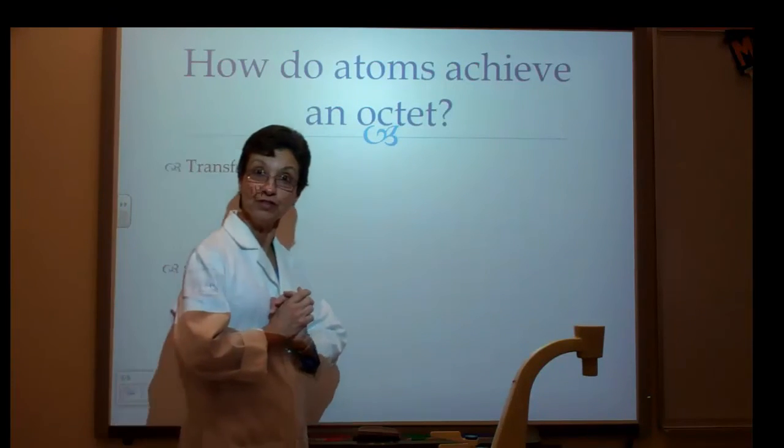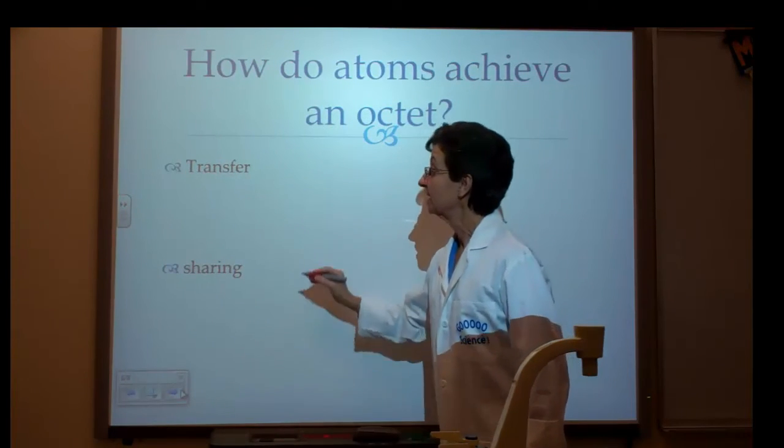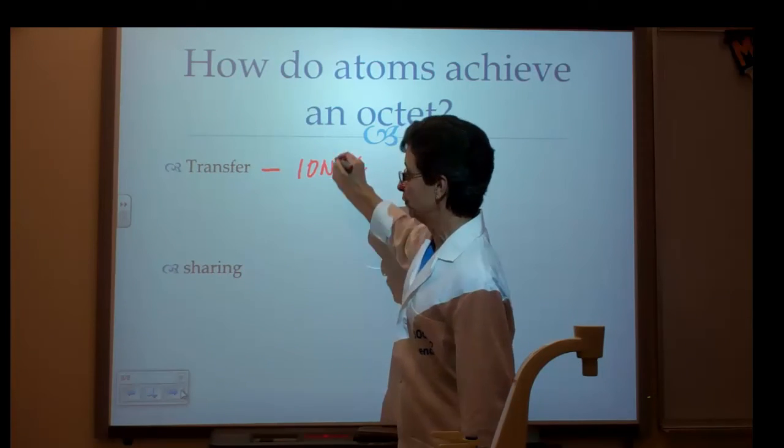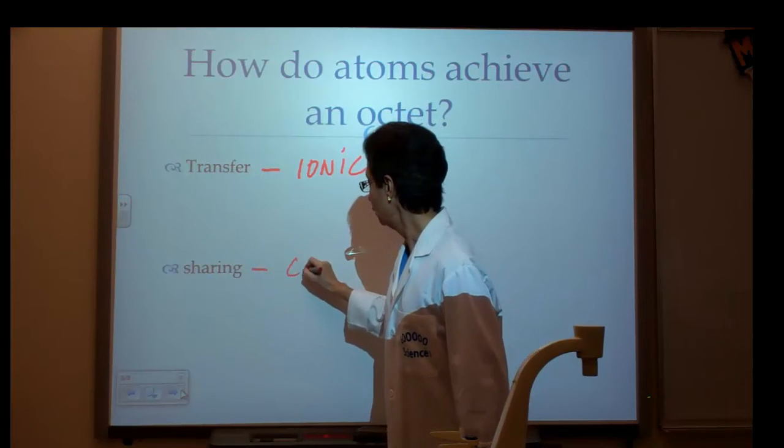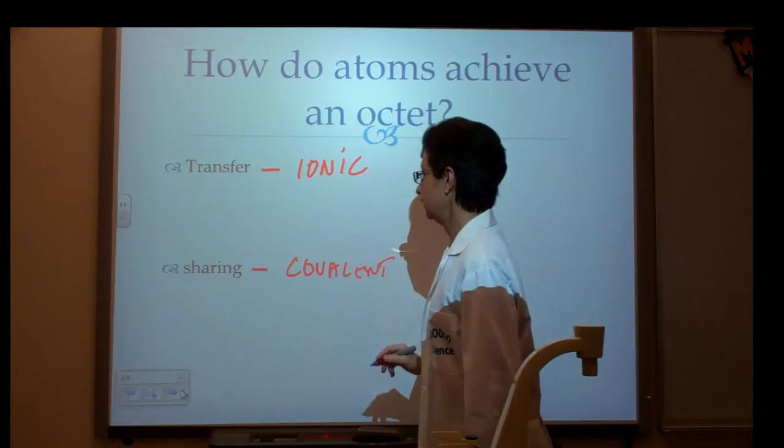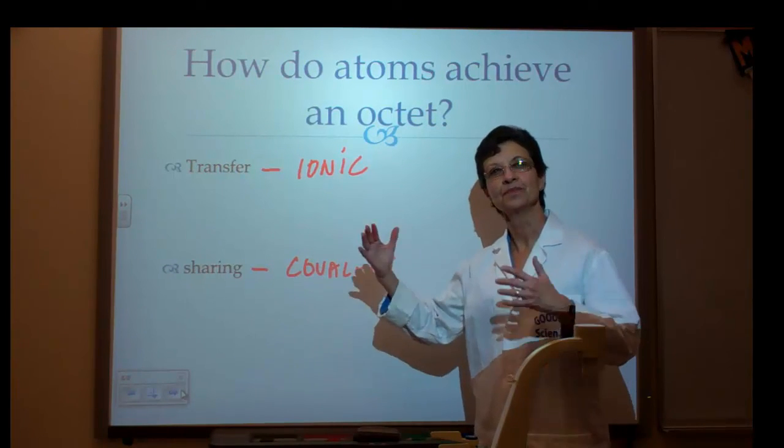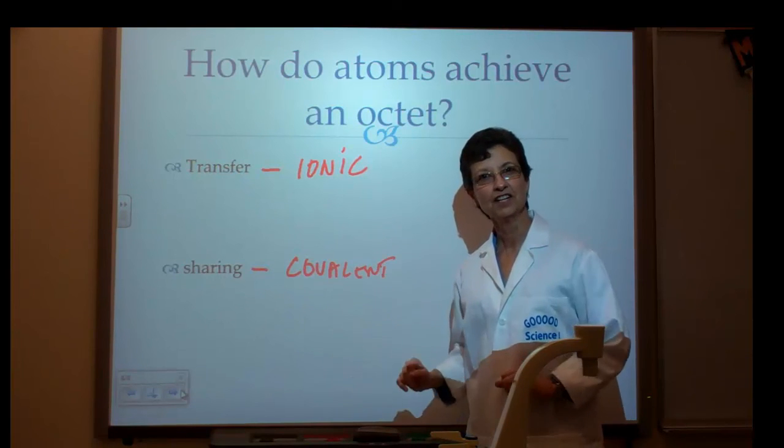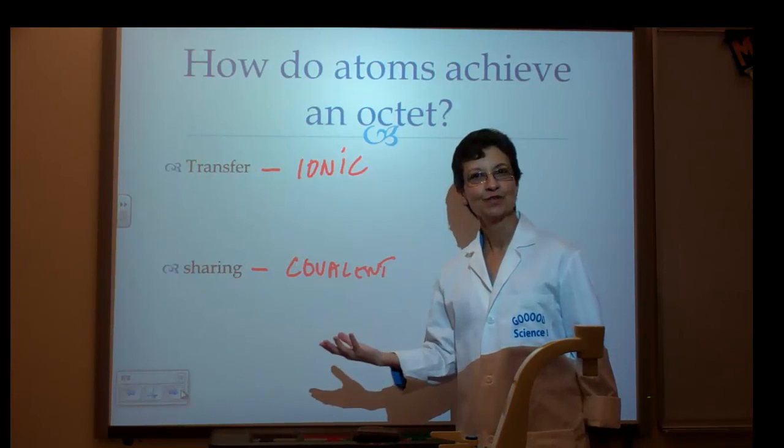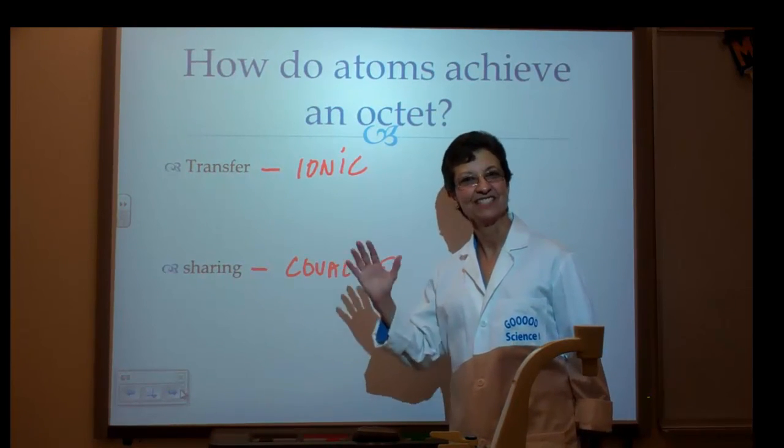So in conclusion, just to remember, transferring electrons: if you transfer electrons, an ionic bond has been formed. If you're sharing electrons, a covalent bond has been formed. Later on, you're going to learn that there are a couple of types of covalent bonds, but this, in a nutshell, is what you need to know as far as Lewis dot and the octet rule. Have a great day. See you in class.